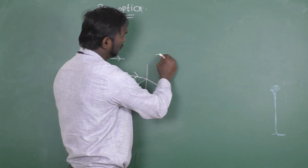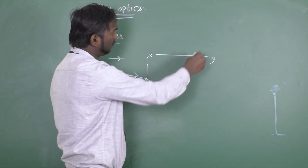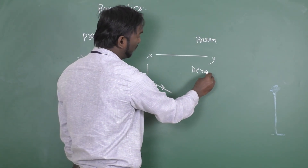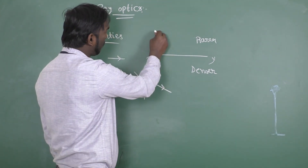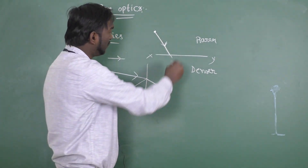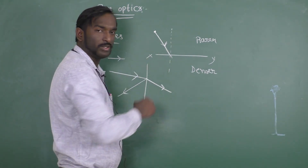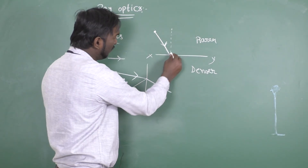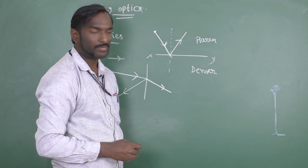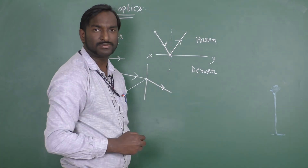Reflection means: suppose there is a surface XY that separates two media — let one be a rarer medium and the other a denser medium. When light strikes on the surface, I'll draw a normal ray, that is a ray which is perpendicular to the point of incidence. This ray bounces back into the same medium. Reflection means a bouncing back of light into the same medium.